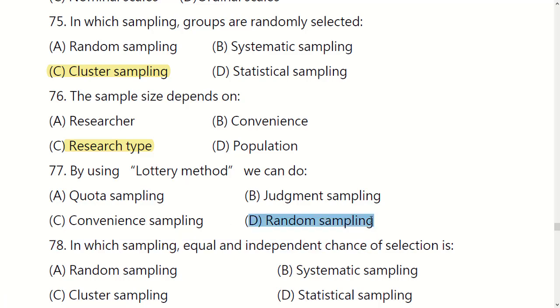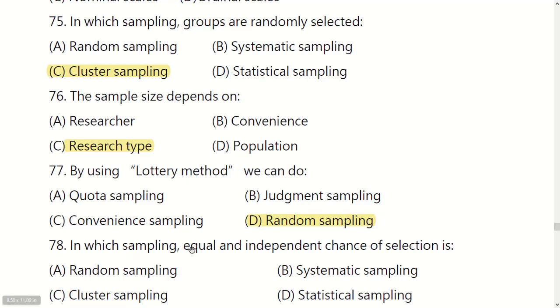By using the lottery method, we can do: quota sampling, judgment sampling, convenience sampling, or random sampling. The right option is D: random sampling.